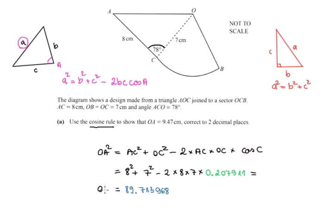So then OA squared is equal to this. That means that OA will be the square root of 89.713968. And surprise surprise that will give us 9.4717. And some other digits it doesn't matter because the result needs to be correct to two decimal places. So then we will be left with 9.47. So then OA is equal to 9.47.